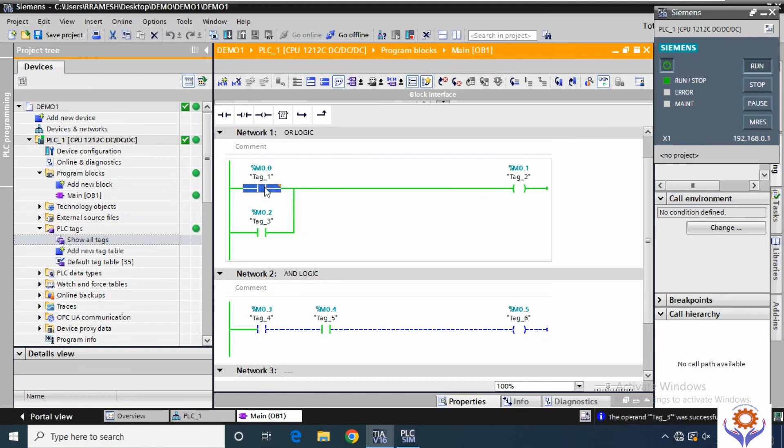Because both inputs are connected in parallel. If any one of the input is ON, then the output becomes ON.